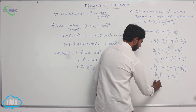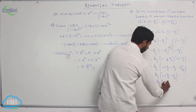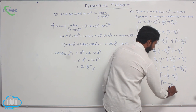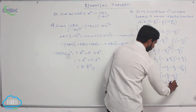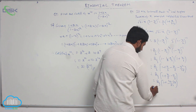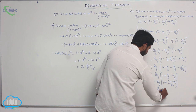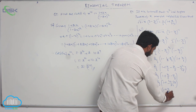Taking LCM of 6 and 8, the LCM is 24. So we get 4x minus 3x over 24, which gives x by 24. Therefore the expression equals 2 by 3 of 1 plus x by 24, which is what was required to be shown.